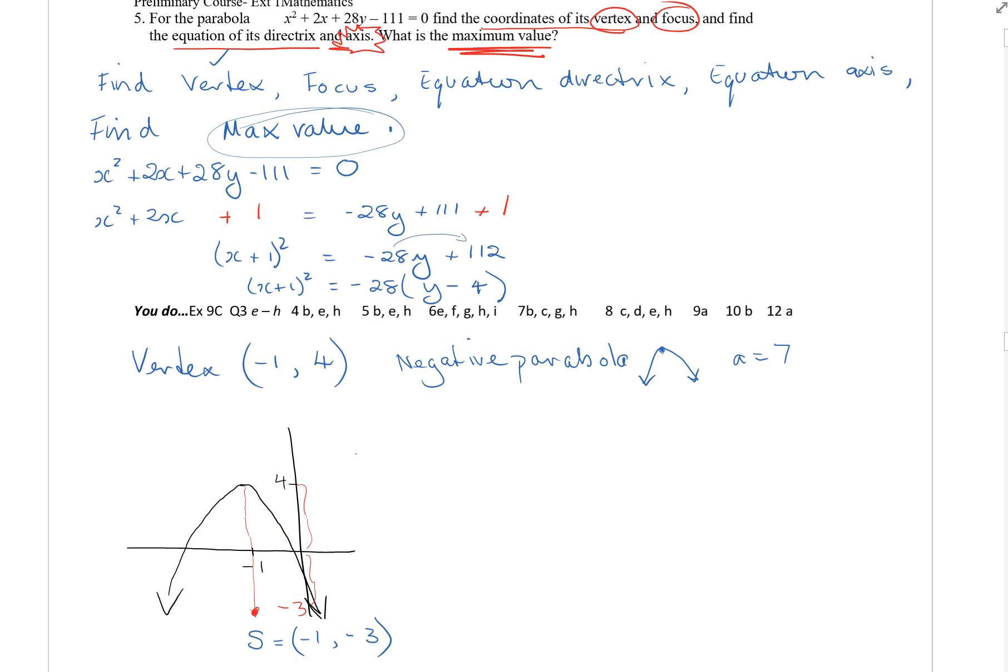And then likewise I would go 7 units in that direction, which would take me up to 11, and I would have the directrix going up there. So that'll allow me to say the directrix occurs at y is equal to 11. So I've done the coordinates of the vertex, the coordinates of the focus.